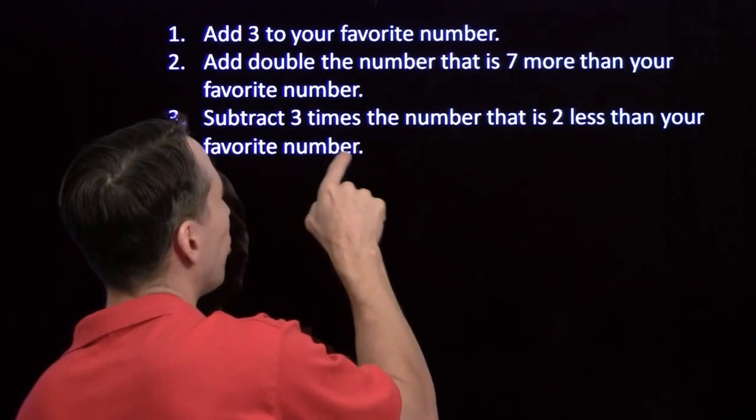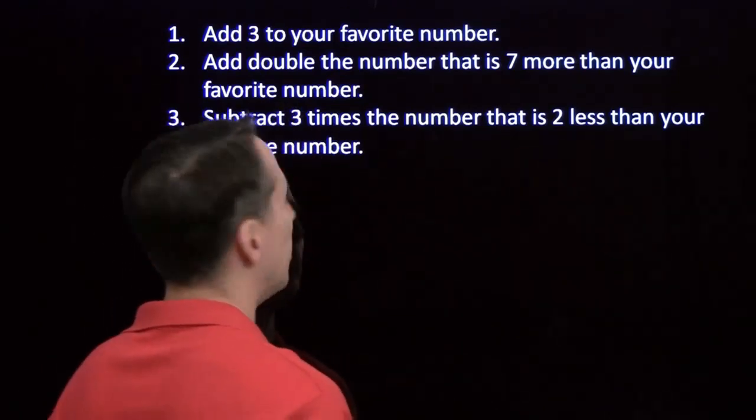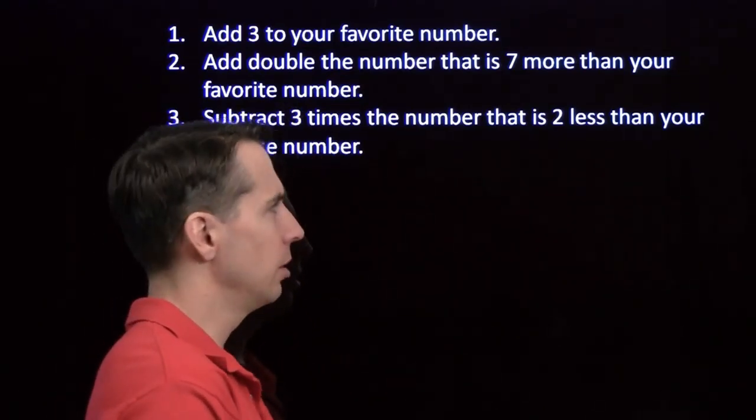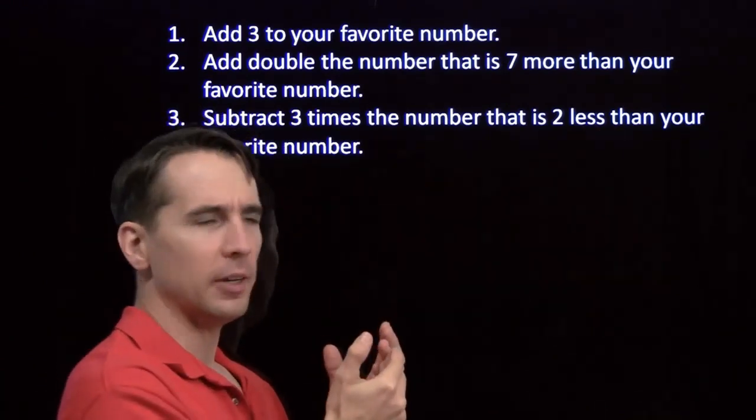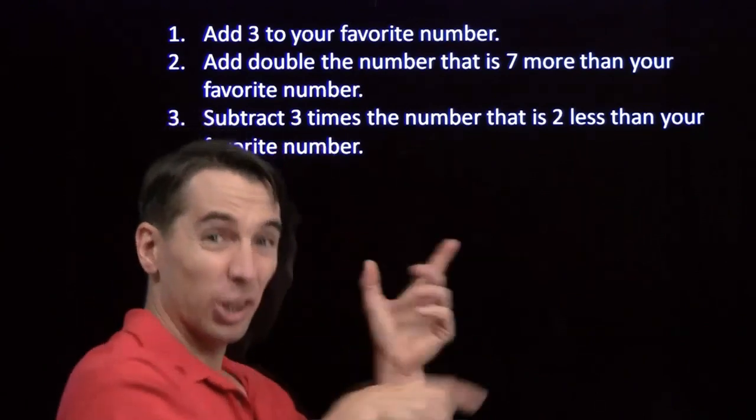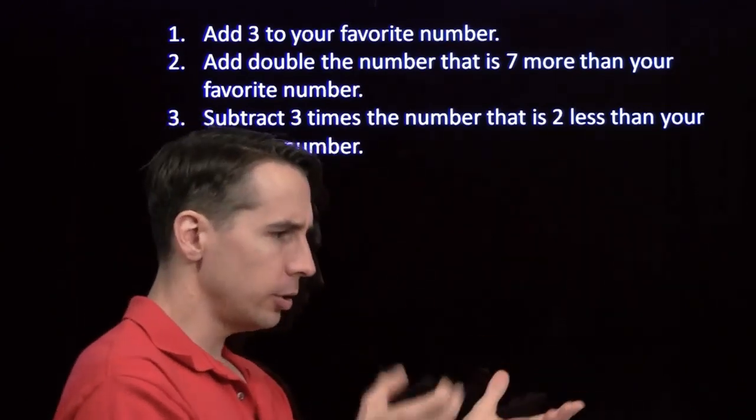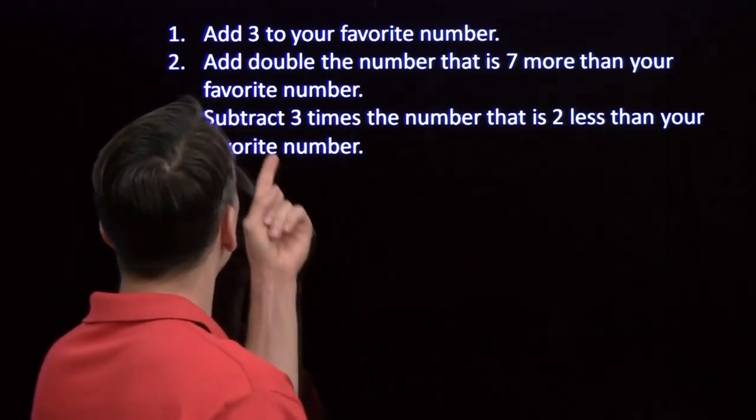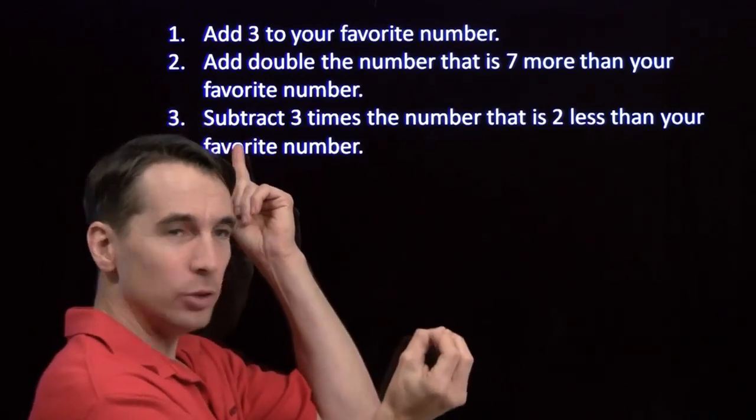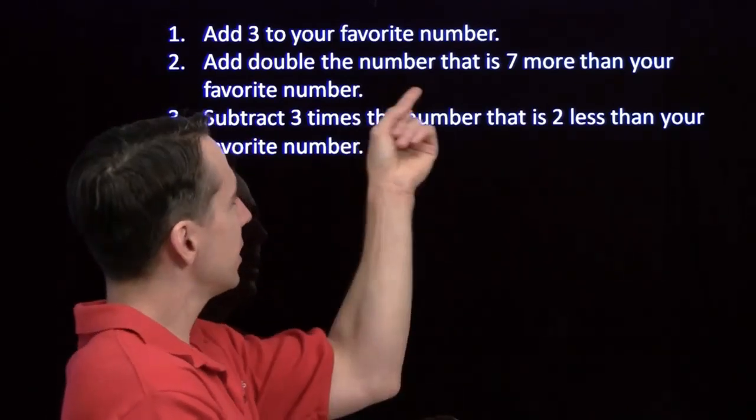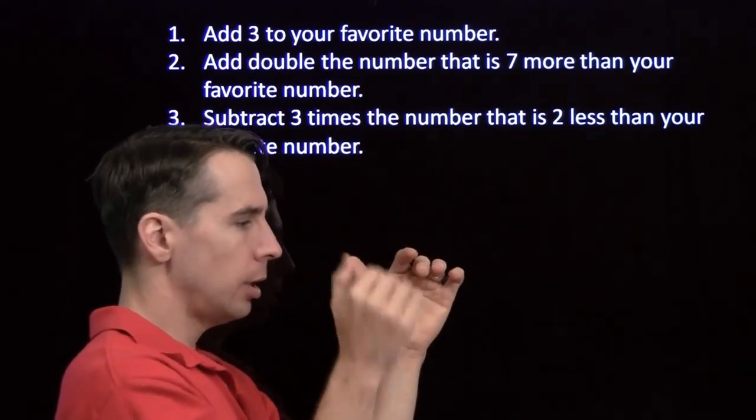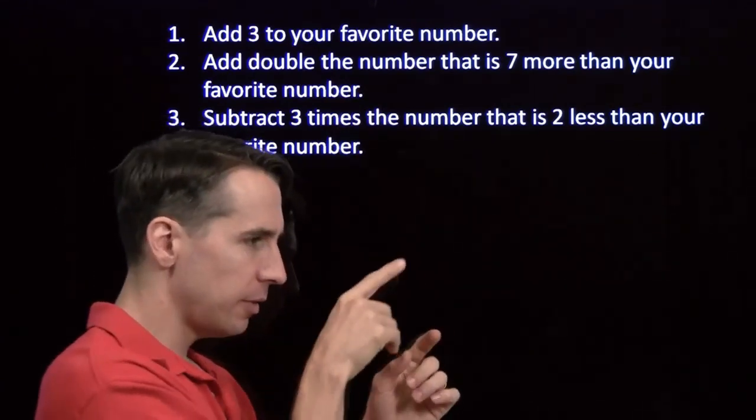I'm going to subtract three times the number that is two less than my favorite number. What does that mean? So let's see, two less than my favorite number. So I'll subtract two from my favorite number, and then I'll take three times that, so I'll triple that and I get a new number. Okay, got it. And now I'm going to subtract that new number from what I had at the end of step two. So I'm going to take this at the end of step two, and I'm going to subtract three times two less than my favorite number, borrow.